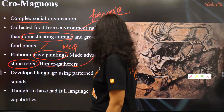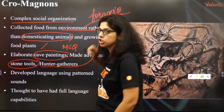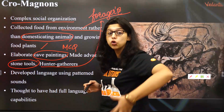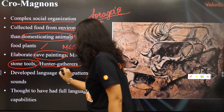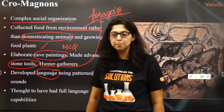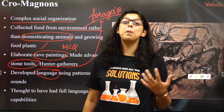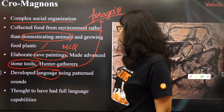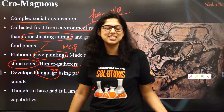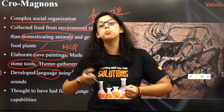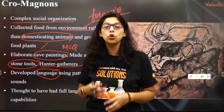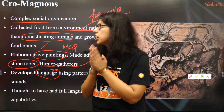Hunter-gatherers are referred to as foragers — they travel, forage, hunt for food, and gather food. Cro-Magnons developed language using simple patterned sounds and are thought to have had full language capabilities. That means they could emote — they could tell other people what they were feeling through language.